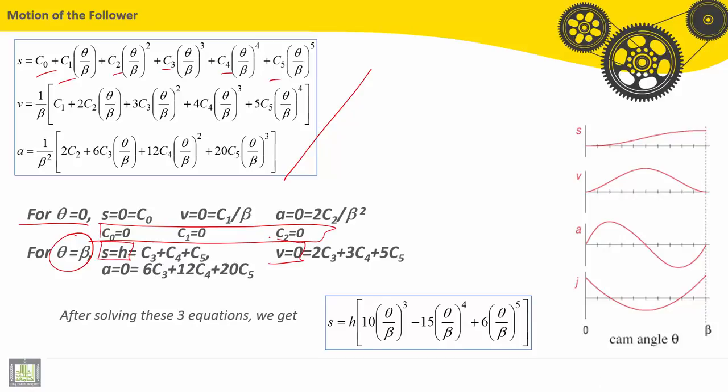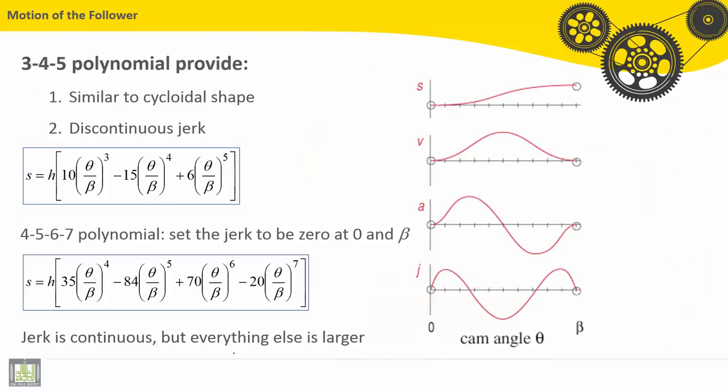Velocity equals 0, acceleration equals 0. So we have 3 equations: first one, second one, and third one, with 3 variables or parameters which are c3, c4, and c5. After solving these 3 equations, we can find out the position equation or function.